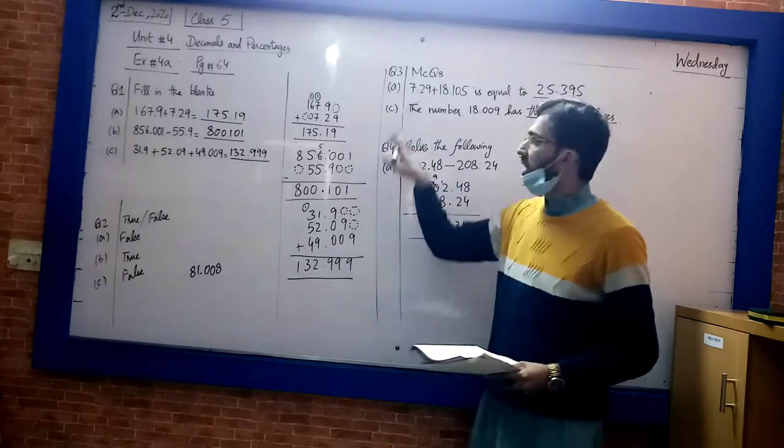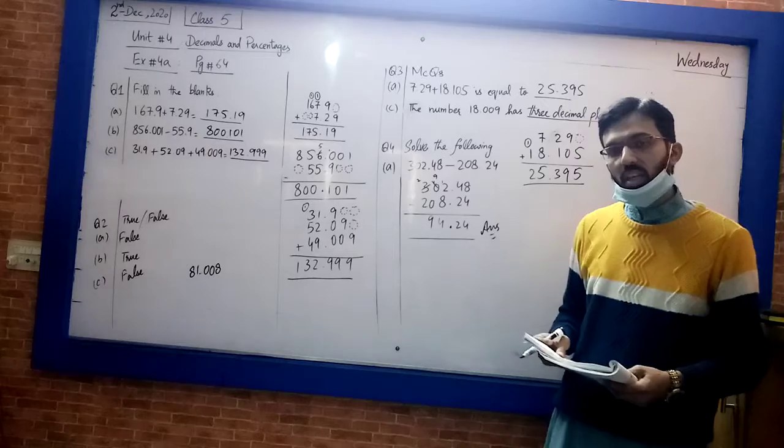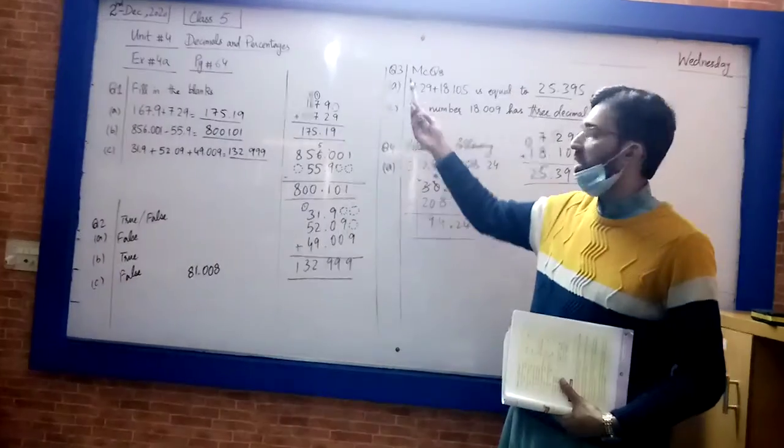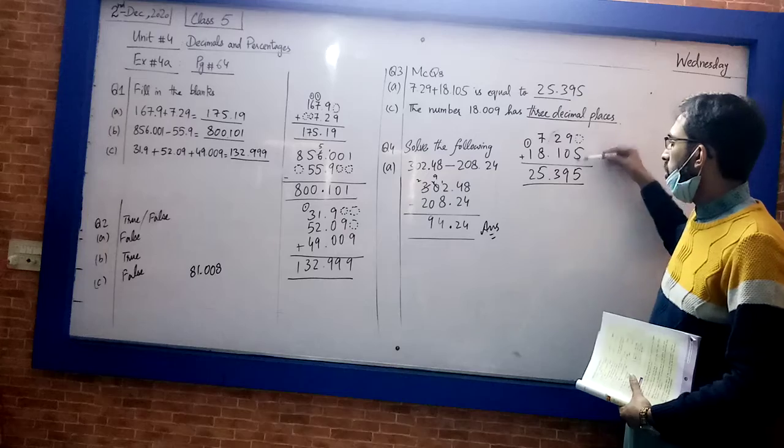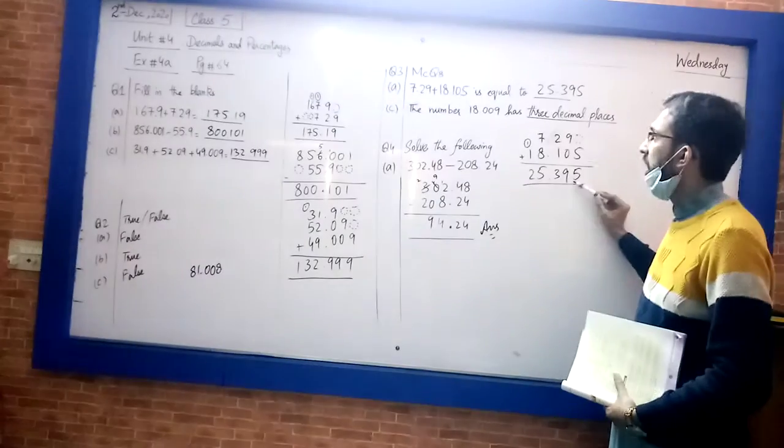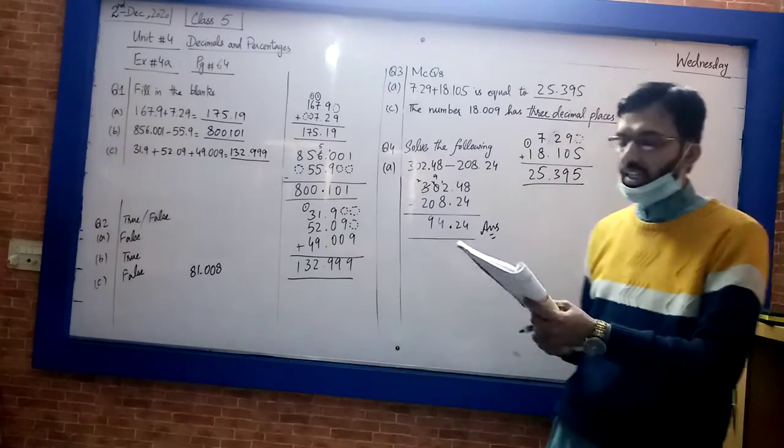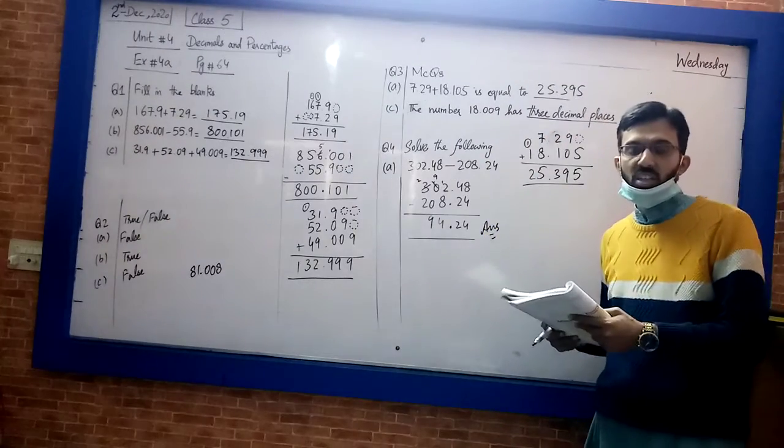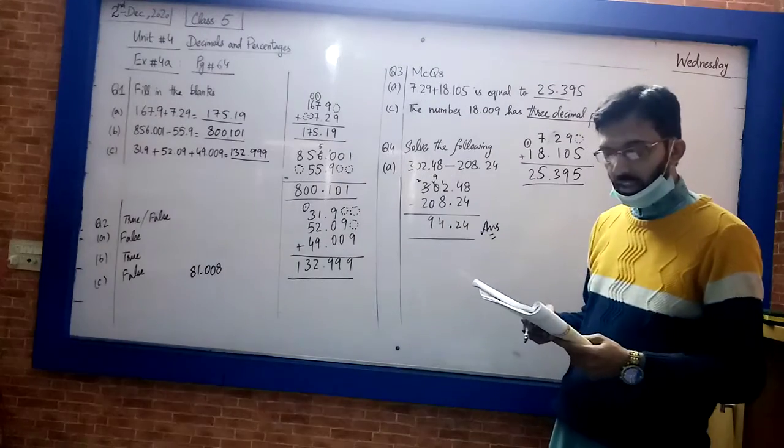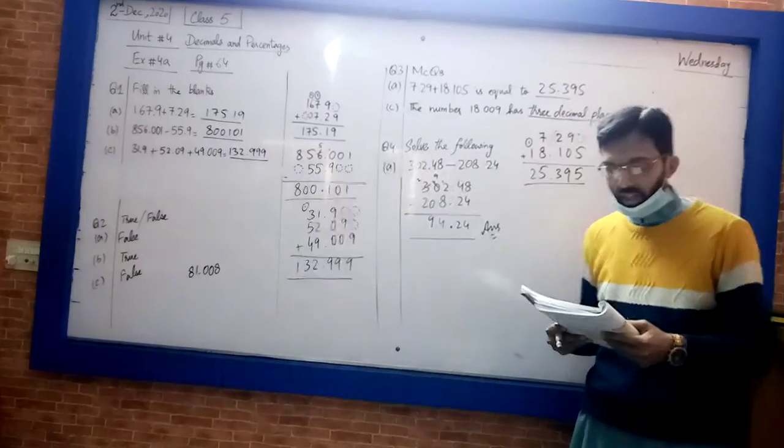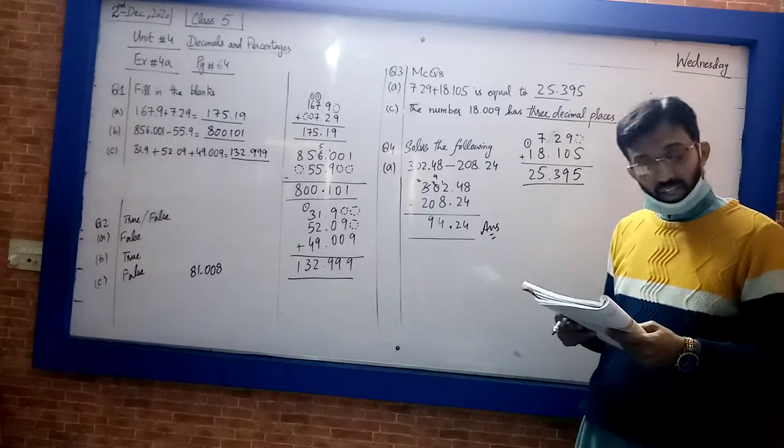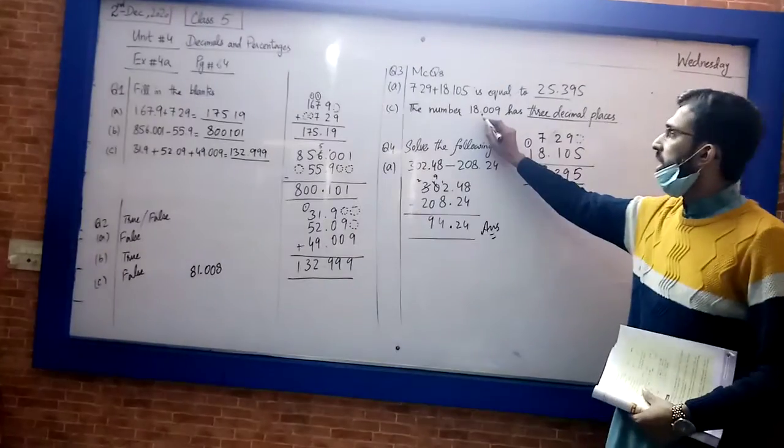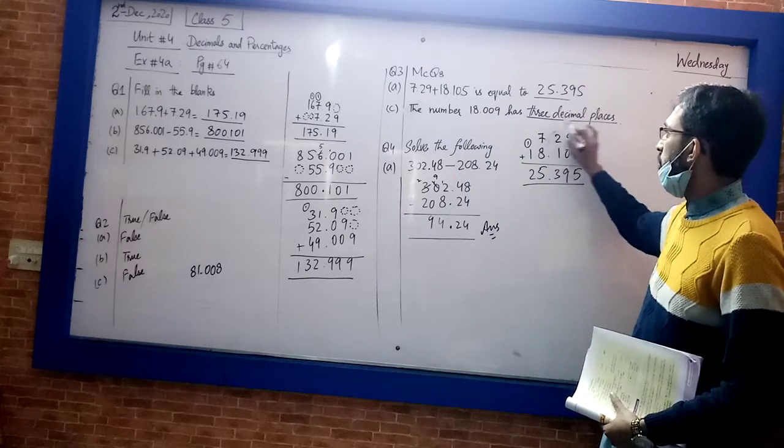Now we are going to question number 3, multiple choice questions which are very easy. When you add two numbers, you have answer 25.395. If you have options A, B, C or D, then 25.395 is your correct option, which is the C part. The number 18.009 has 3 decimal places. If you have 3 digits after the decimal, it means it has 3 decimal places, so the correct option is C.